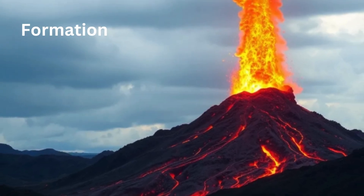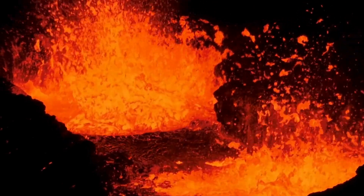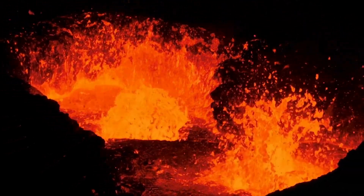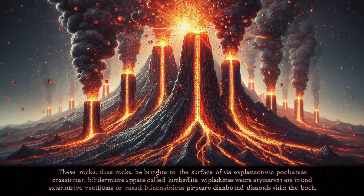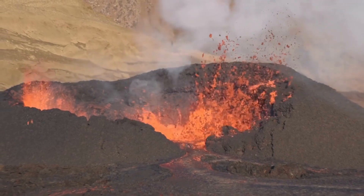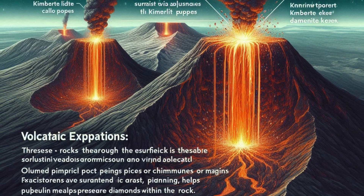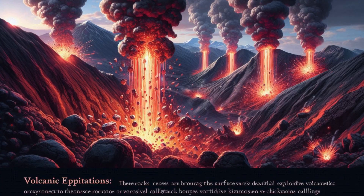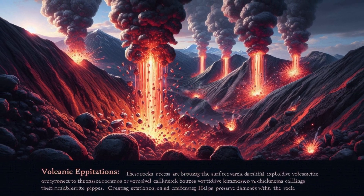Formation — depth: kimberlite forms very deep within the earth's mantle, at depths of 150 to 450 kilometers, where diamonds crystallize under high pressure and temperatures. Volcanic eruptions: these rocks are brought to the surface via explosive volcanic eruptions, creating vertical pipes or chimneys called kimberlite pipes. The eruptions are violent and rapid, which helps preserve diamonds within the rock.